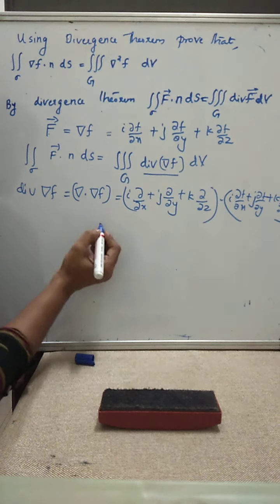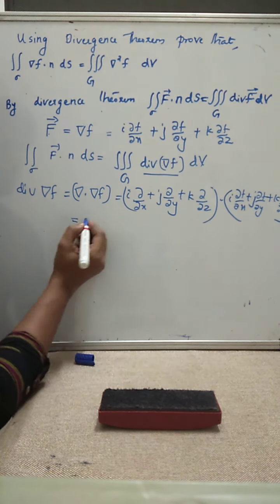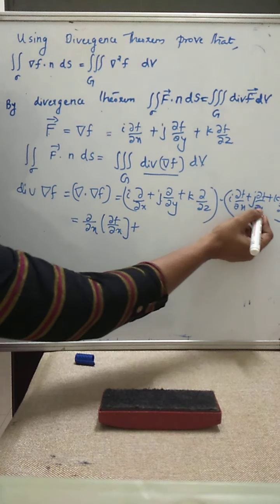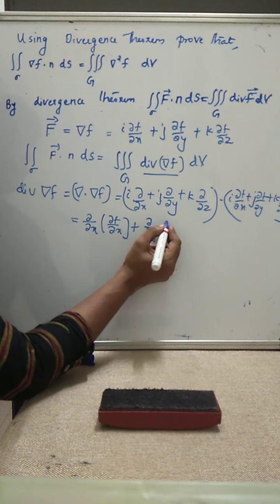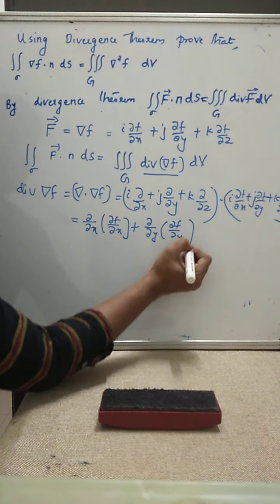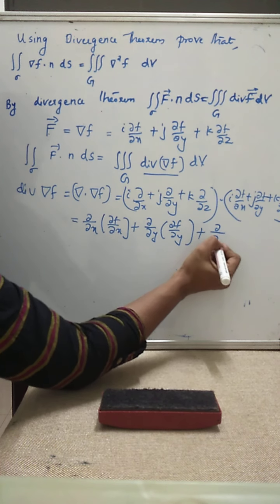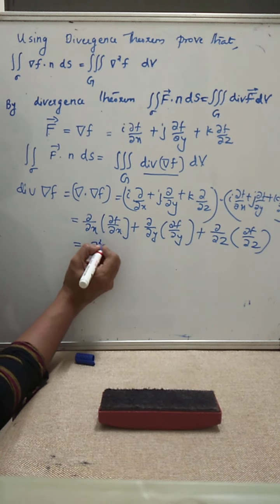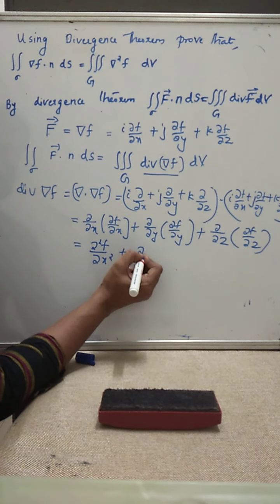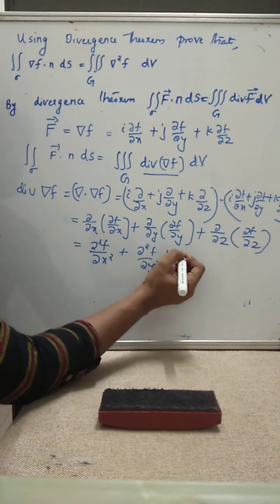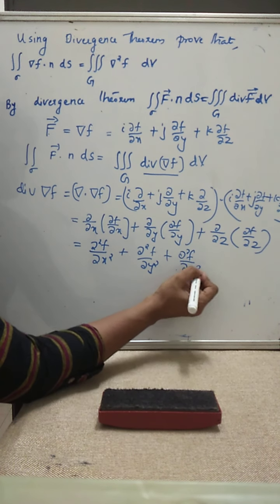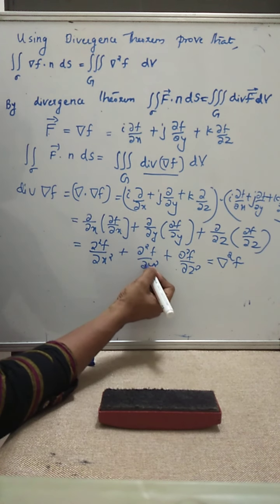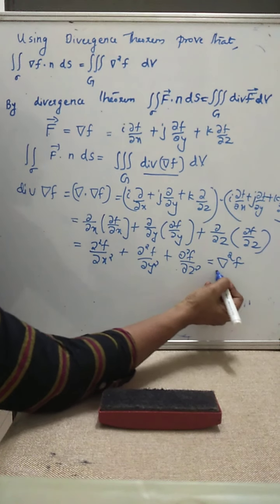Taking the dot product, the i-th component gives ∂/∂x of ∂f/∂x, the j-th component gives ∂/∂y of ∂f/∂y, and the k-th component gives ∂/∂z of ∂f/∂z. This reduces to ∂²f/∂x² plus ∂²f/∂y² plus ∂²f/∂z², which we denote as del squared f, where del squared means ∂²/∂x² plus ∂²/∂y² plus ∂²/∂z².